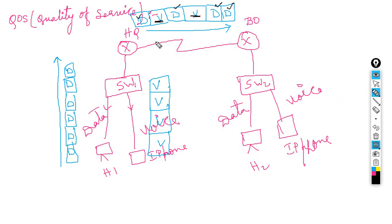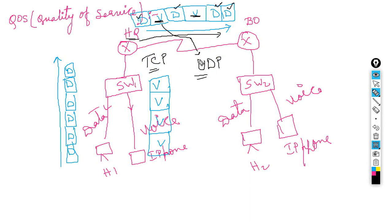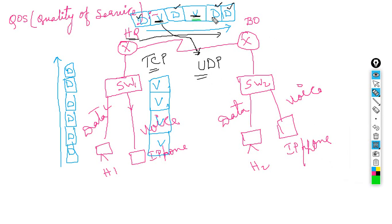What we can do is apply Quality of Service, telling the head office router: whenever you have voice traffic or video traffic, give priority to that one and forward it first; later you can forward the data traffic. This is because data traffic uses TCP — TCP is a reliable protocol that uses acknowledgements, so if there is any data loss they will resend the packet. Whereas voice traffic uses UDP, which does not send any acknowledgement. So we need to prioritize voice and video traffic compared to data traffic.